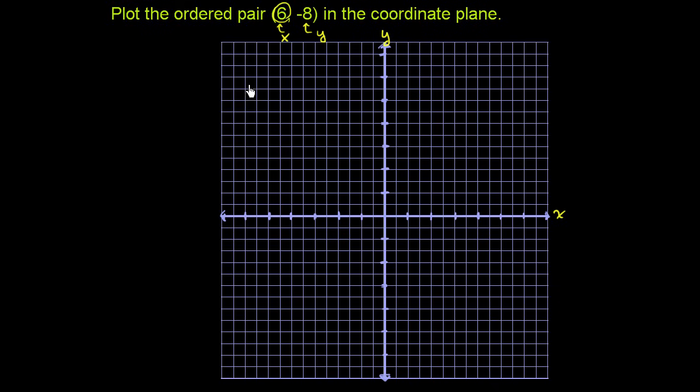That means we count up 6 on the x-axis. So let's count up 1, 2, 3, 4, 5, and then we've moved up 6 along the x-axis.